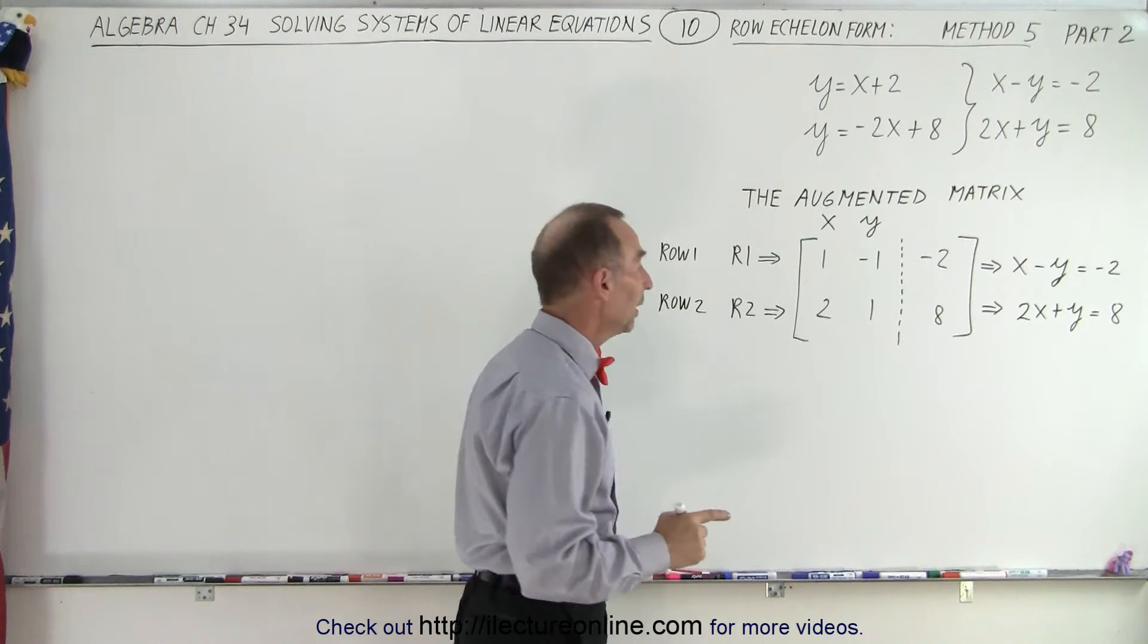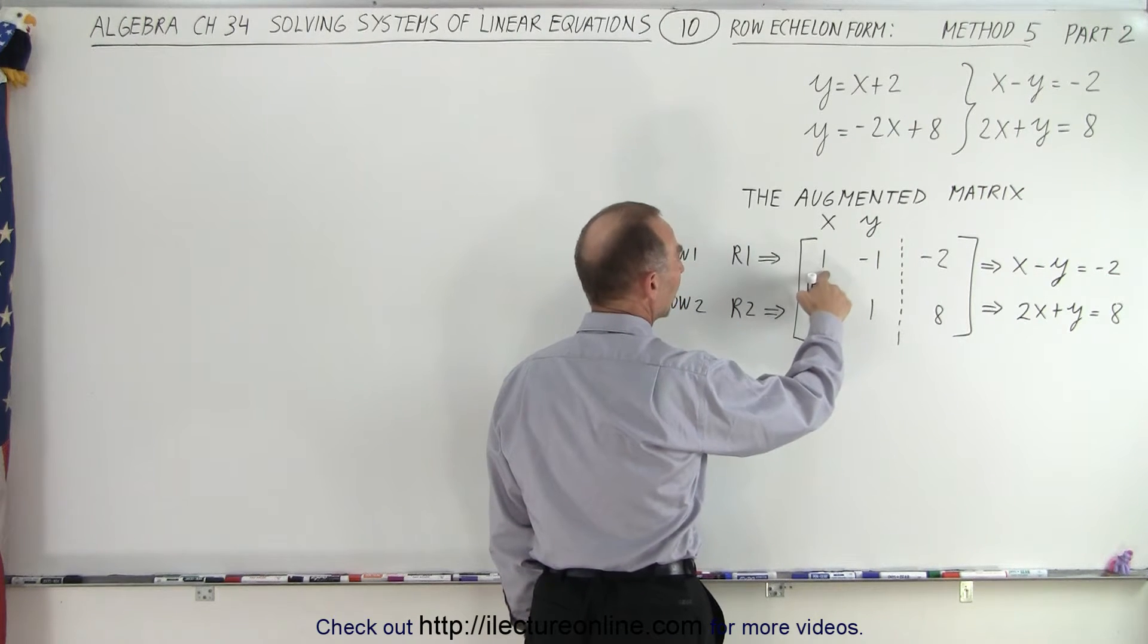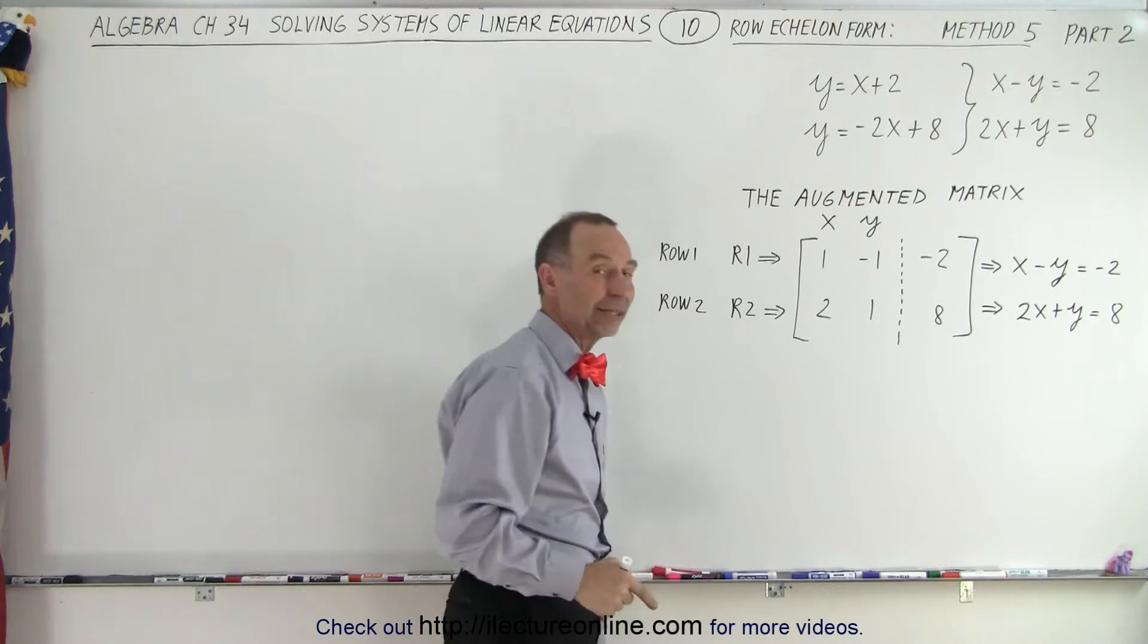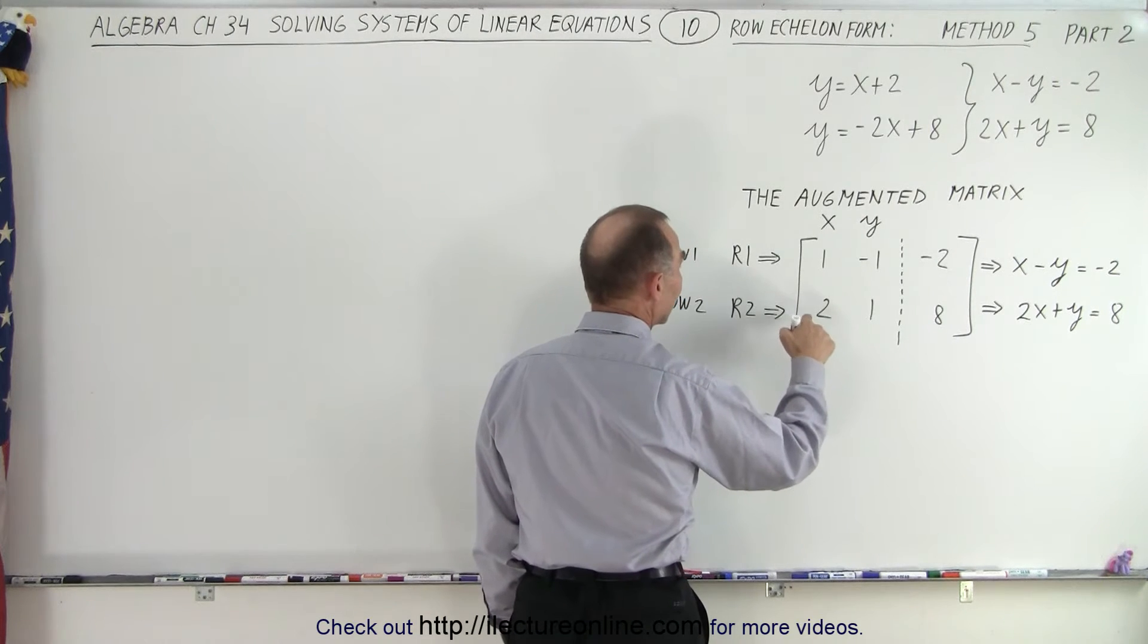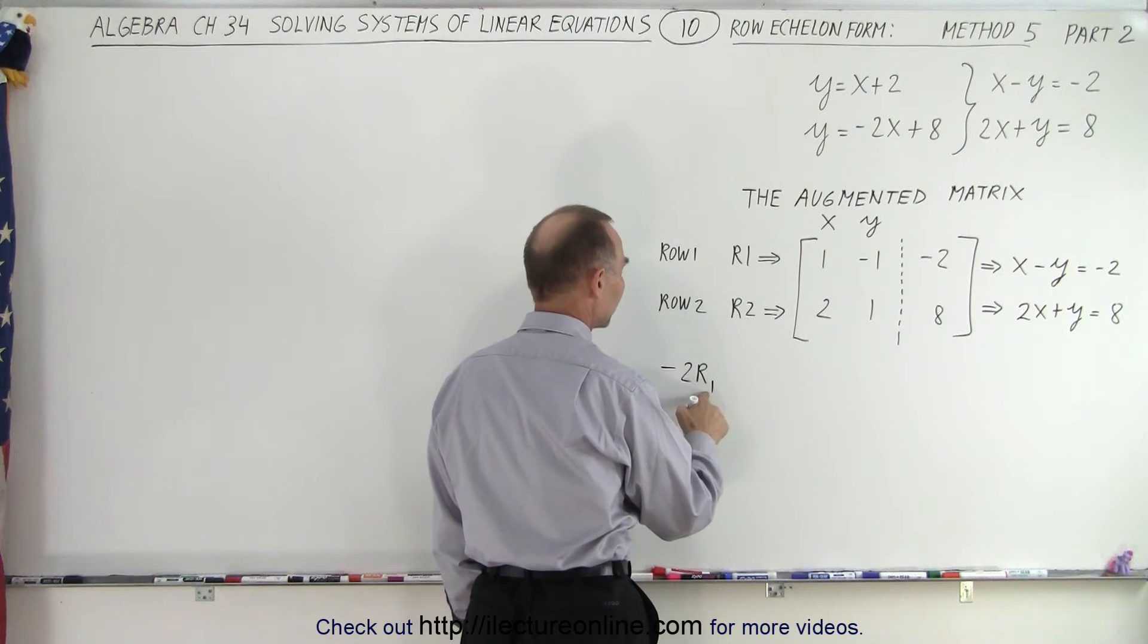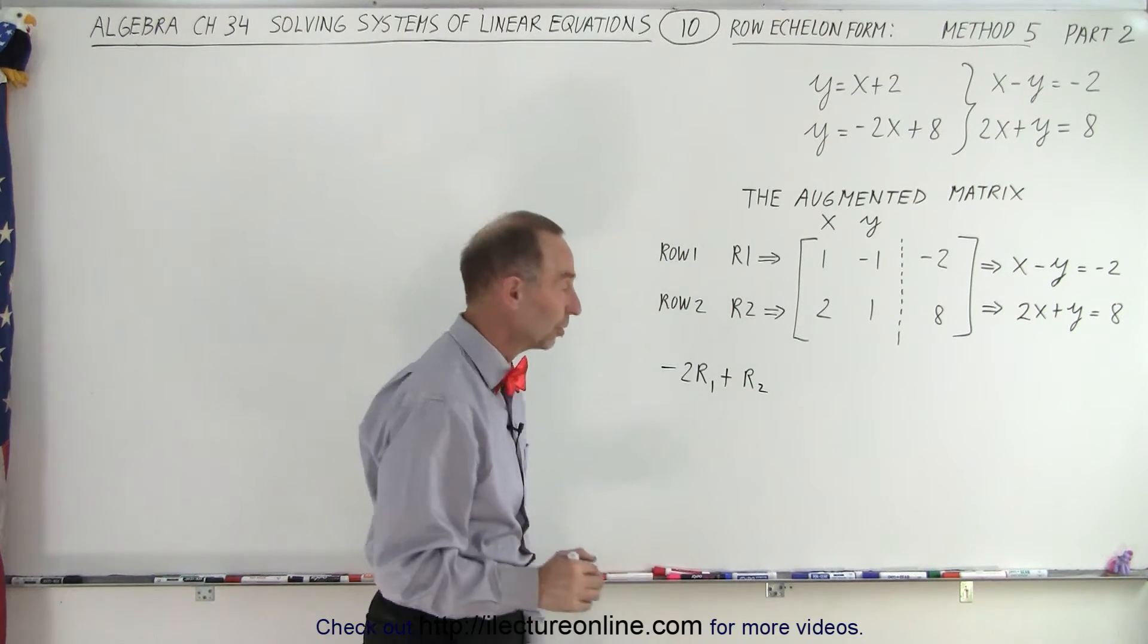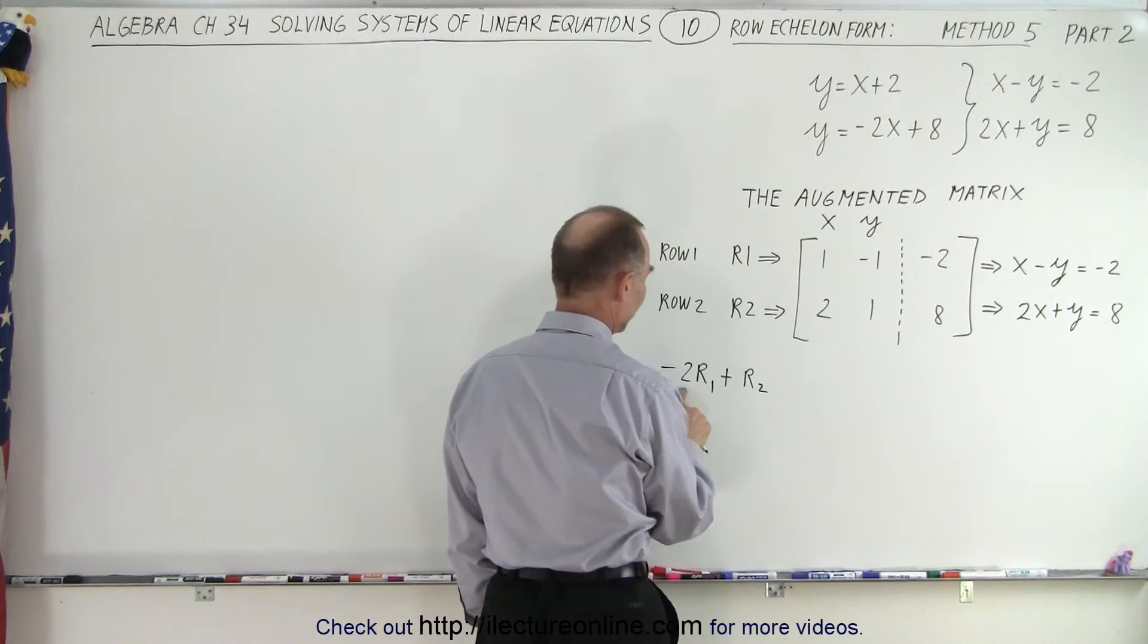So what we're going to do is we want to eliminate 2. We're going to multiply the first row by the negative of the number in the second row. We're going to take -2 times the first row, -2 times r1, and add that to r2. So we're doing an operation where we're multiplying this whole row, all the numbers in this row, by -2 and adding it to row 2.